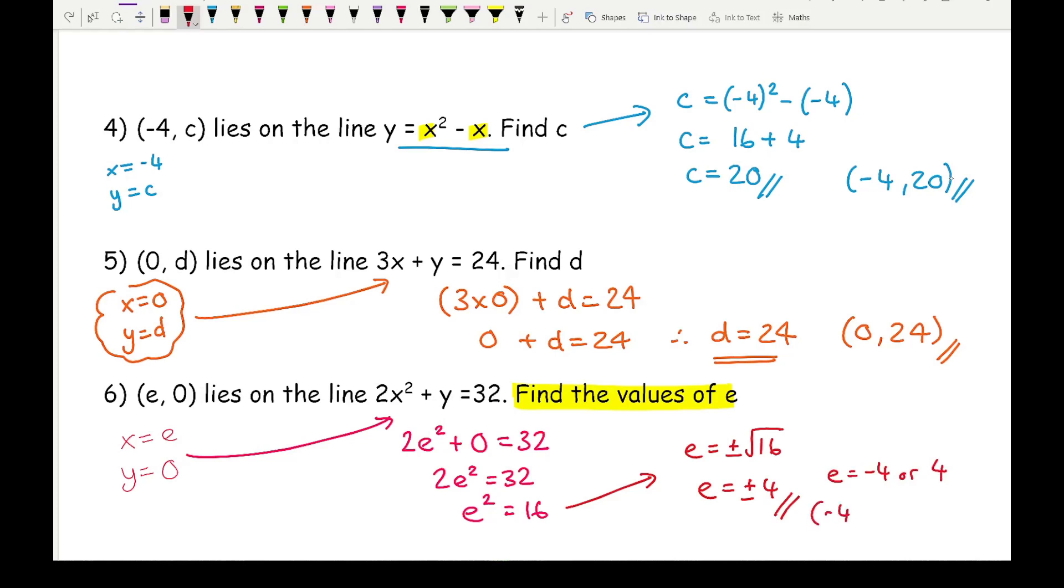Writing that as coordinates, I've got (-4, 0) or (4, 0). And there are my final answers for those. Hopefully that makes sense on how to find the missing ordinate when you're given one ordinate and an equation.